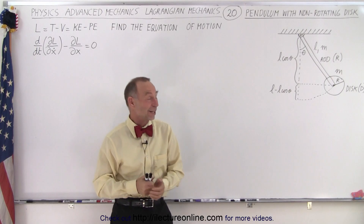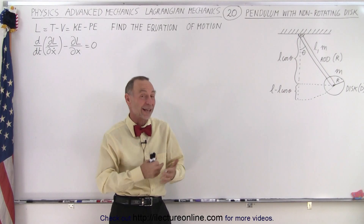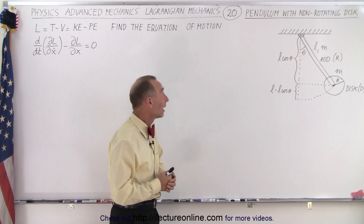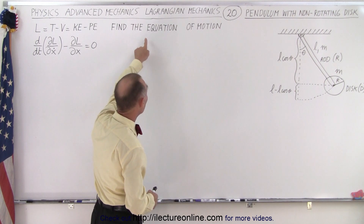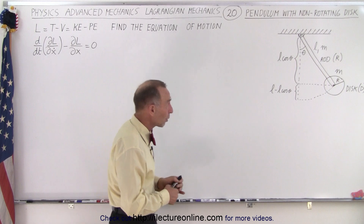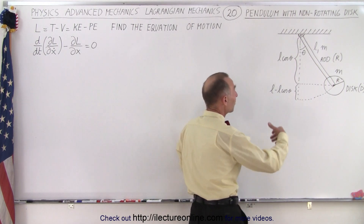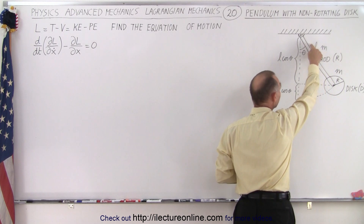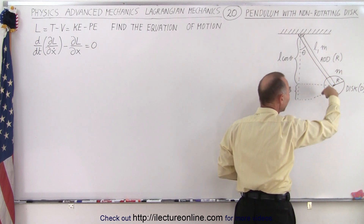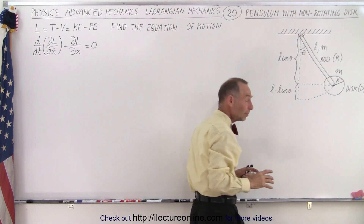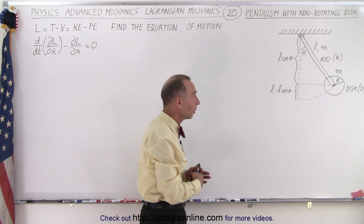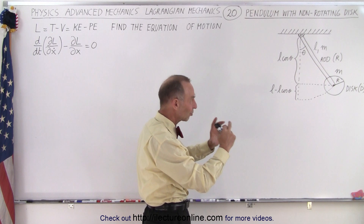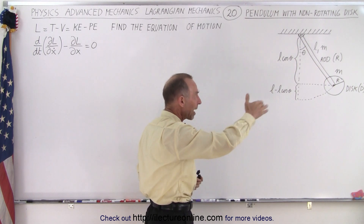Welcome to ElectronLine. Here we have our next example that we're going to solve using the Lagrangian technique, finding the equation of motion. We have a pendulum consisting of a bar with mass m and length L, and attached to the bar is a solid disc. In this particular example the disc itself is not going to rotate — it's fixed to the bar and both are swinging back and forth.